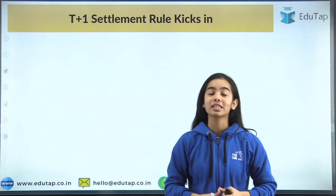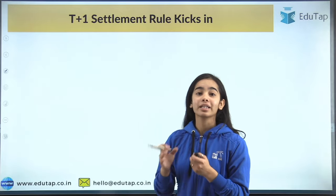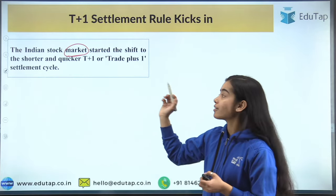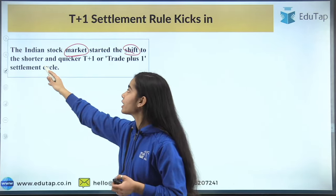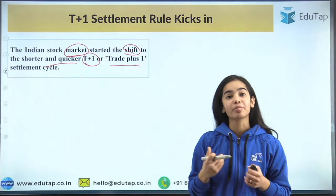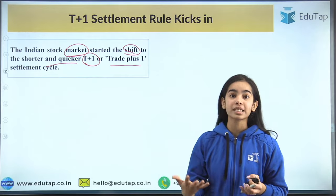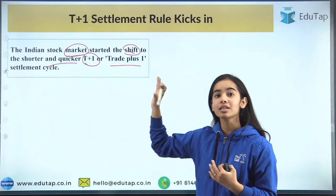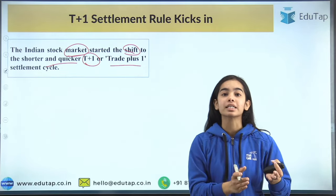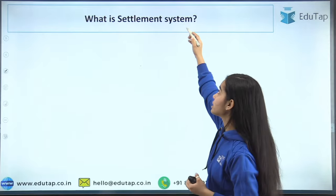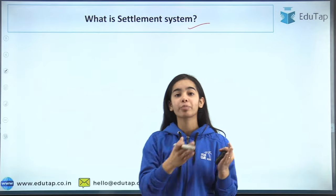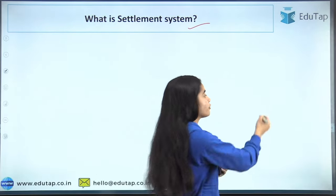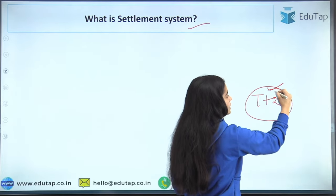Starting with the first news article: the T plus one settlement rule has kicked in at NSE and BSE. The Indian stock markets — the National Stock Exchange and the Bombay Stock Exchange — have started the shift to the shorter and quicker T plus one, that is trade plus one, settlement cycle. We are currently following the trade plus two settlement system.